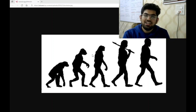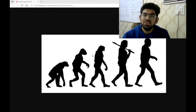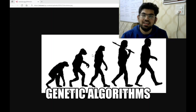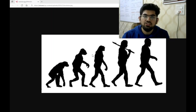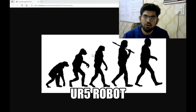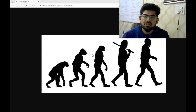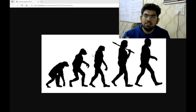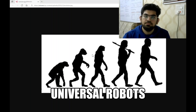Hello engineers. Welcome back to another video. In this video, we are going to do motion planning on robots using genetic algorithms. We are going to design a motion planning algorithm for a UR5 robot, which is a robot arm or robot manipulator made by Universal Robots.